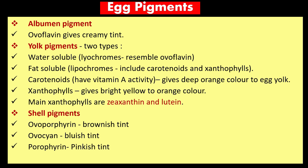Egg pigments: in albumin, ovoflavin gives a creamy tint color. In the yolk there are two types — water-soluble liochromes, and fat-soluble lipochromes including carotenoids and xanthophyll. Carotenoids have vitamin A activity and give a deep orange color to egg yolk. Xanthophyll gives bright yellow to orange color; main xanthophylls are zeaxanthin and lutein. Shell pigments: ooporphyrin gives a brownish tint, oocyan gives a bluish tint, and porphyrin gives a pinkish tint.